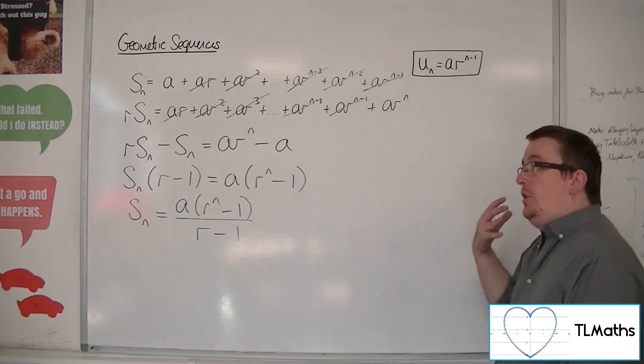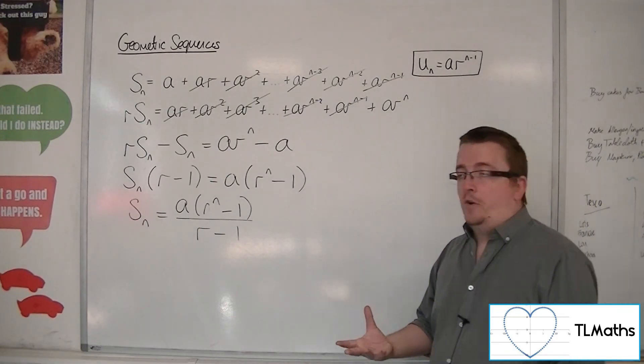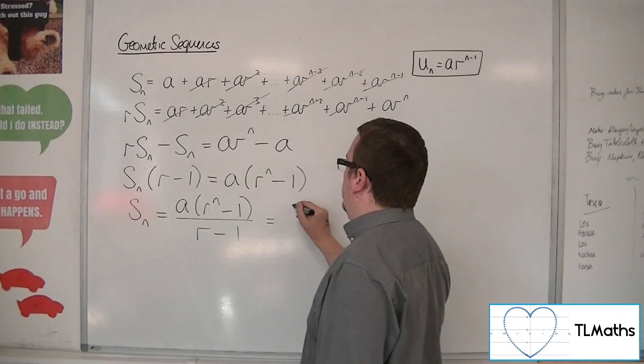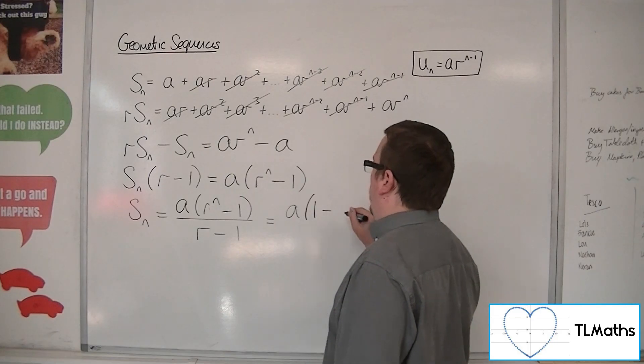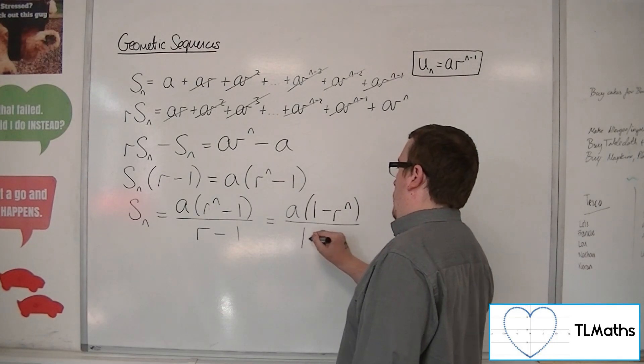And you don't have to have it that way because you could multiply top and bottom by minus 1. And subsequently, what you'll get is a times (1 - r^n) over (1 - r).